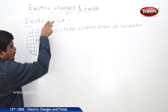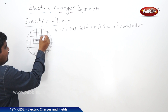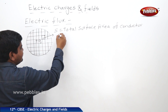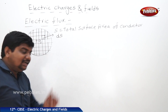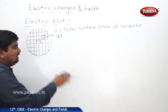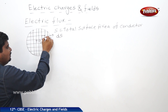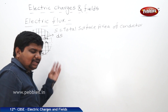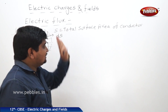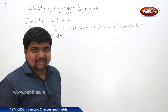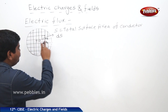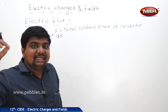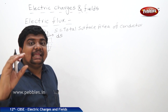Taking a small portion of the total surface area called dS, electric field lines cross through this dS. There are many such elements: dS1, dS2, dS3, up to dSn. The collectiveness of dS1 to dSn is the total surface area of the conductor. The number of electric field lines passing through the unit surface area at 90 degrees is electric flux.